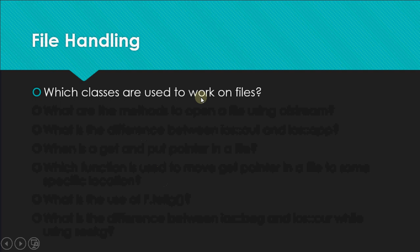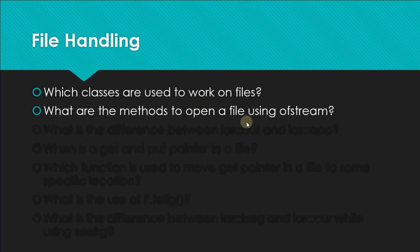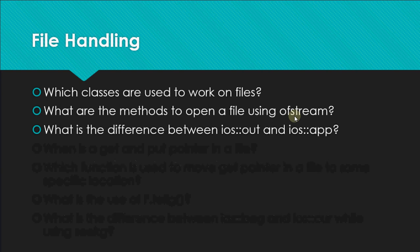Which classes are used to work on files? We have ifstream for reading from a file, ofstream for writing to a file, and fstream which allows both read and write. There are two methods to open a file using an ofstream object: the constructor method — where you give the file name in round brackets when creating the object — and using the open() function, like f.open("filename").